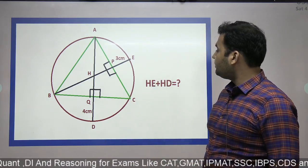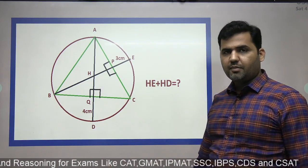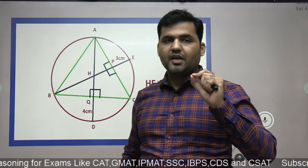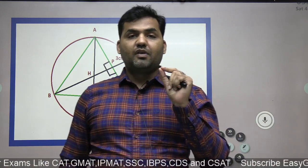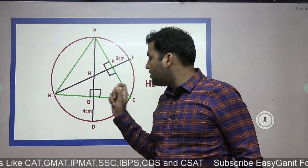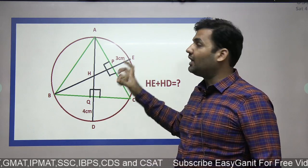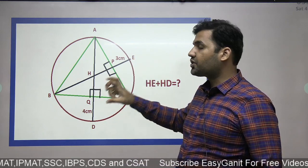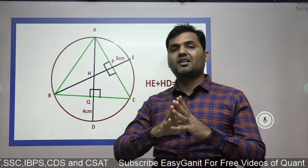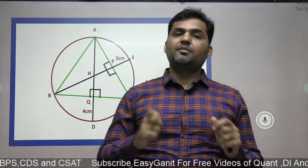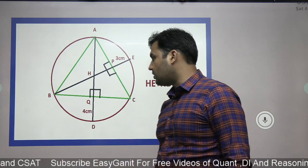This particular rule number four that we are going to discuss is a property of the orthocenter. We will first learn the implementation of the rule — what this rule is — and then we will learn the proof of it. In this complete series I will also be telling the proof of each and every theorem that I am discussing with you.